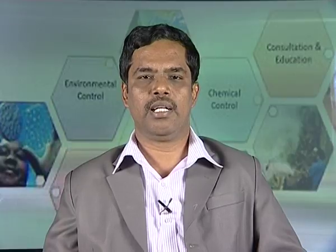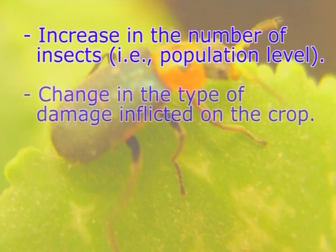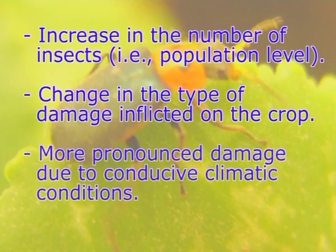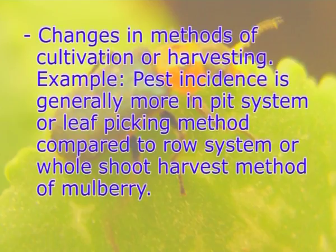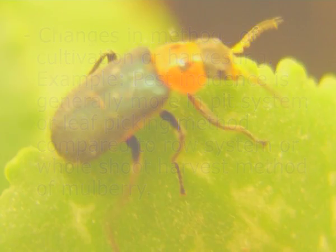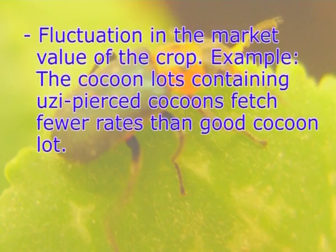These are: increasing the number of insects, that is population level; change in the type of damage inflicted on the crop; more pronounced damage due to conducive climatic conditions; changes in methods of cultivation or harvesting — for example, pest incidence is generally more in pit system or leaf picking method compared to rose system or old shoot harvest method of mulberry — and fluctuation in the market value of the crop.